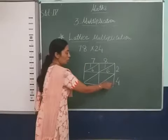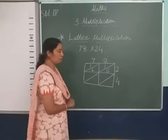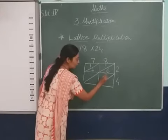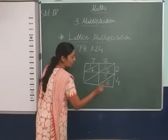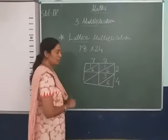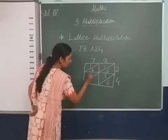Now next, 4 into 8 equals 36. 3 will come here, 6 here. 36. Now 4 into 7 equals 28.